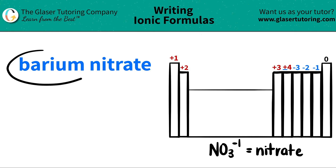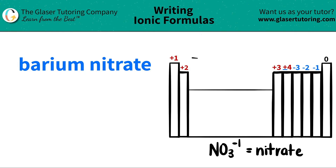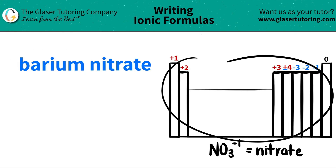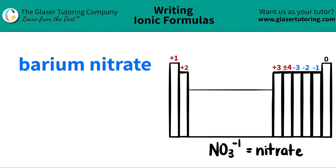Let's start with barium. I'm going to scan the periodic table to find where barium is. Barium is a metal, and it's in group 2 — it's all the way down here. Barium is represented as Ba.